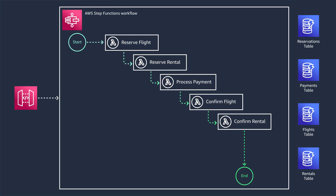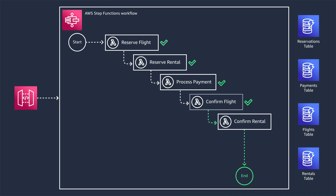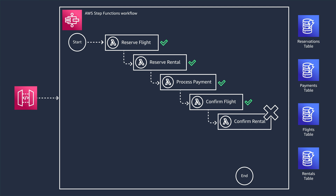Here's an example of a distributed business transaction from a previous project. This workflow runs through a series of steps to book a flight and rent a car. Here you see an AWS Step Function with a series of Lambda functions doing work. The steps are straightforward: reserving a flight and a rental, paying for both, and then confirming the flight and rental. In most cases, the whole transaction runs successfully and the user is able to book a flight and a rental together. Sometimes a failure happens and it doesn't completely go through — for example, ending up having paid for both the flight and rental, but only being able to confirm the flight and not the rental.